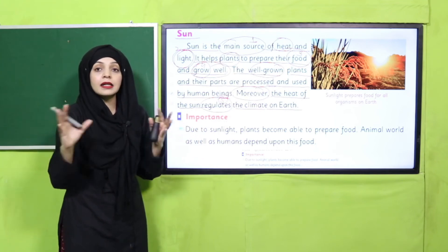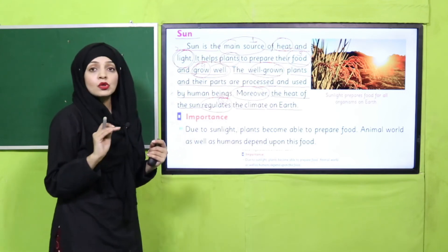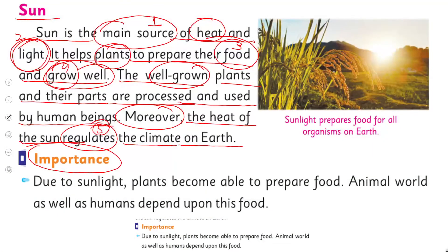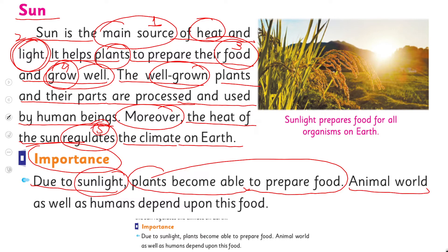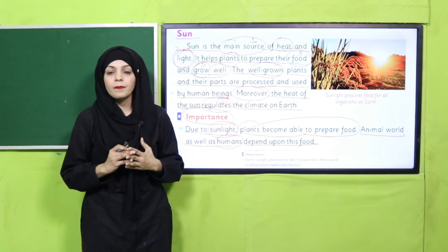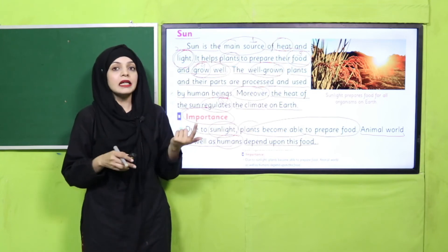Sun is extremely important — without the Sun, life cannot exist on earth. Due to sunlight, plants are able to prepare food, and both the animal world and humans depend upon this food. So the key importance is that both plants and animals depend on the light and heat of the Sun. Today we have learned about the Sun as one of the natural resources.